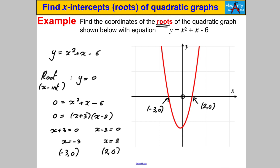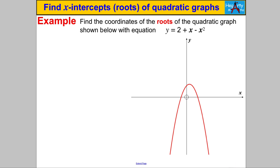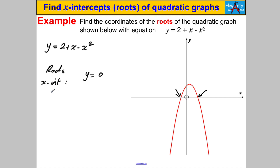Let's try another one — pause the video and have a go. We're trying to find the roots or x-intercepts of y = 2 + x - x². It's a negative quadratic, so it's an n-shaped parabola. At the roots, y = 0, so we solve 0 = 2 + x - x². I don't like the negative x² term, so I'll multiply both sides by -1. Since this side is 0, that's valid and won't change things.